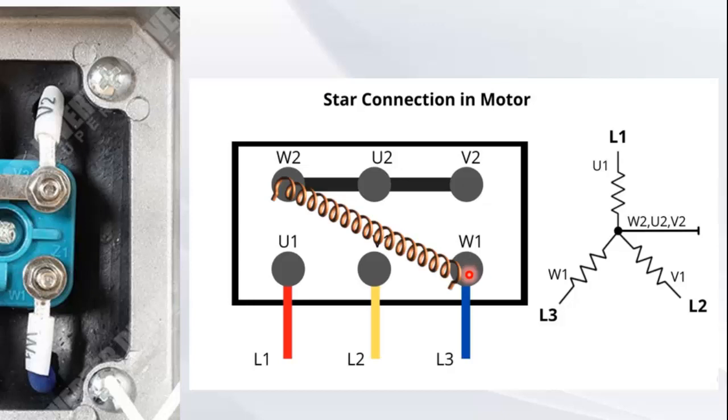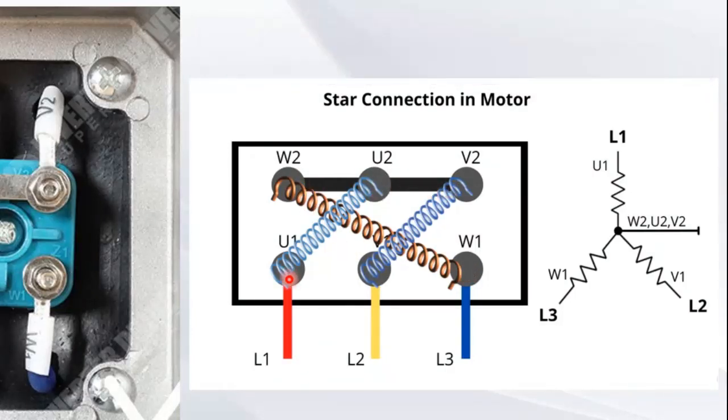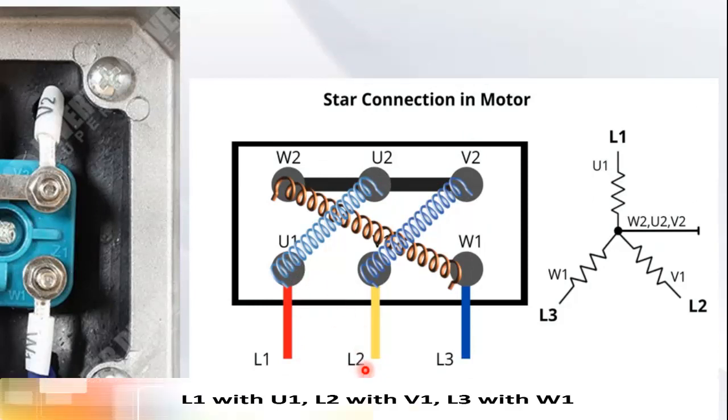Let's draw the winding so you can understand how the actual windings are connected. For star connection, short W2, U2, V2 together and connect L1 with U1, L2 with V1, and L3 with W1.